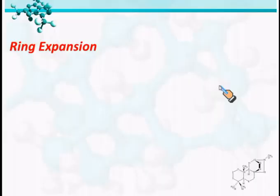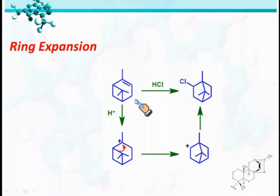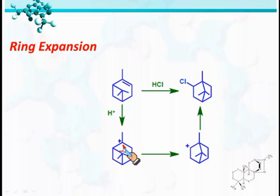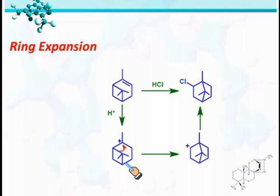When this compound is treated with HCl, first protonation takes place at this carbon center, generating a tertiary carbocation. If the other center were protonated, it would generate a secondary carbocation, which is relatively unstable. So when the compound is treated with acid, the tertiary carbocation forms, then a bond migrates to the electron-deficient carbon, generating a new carbocation, and then the chloride ion attacks the electron-deficient carbon to give this compound.